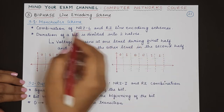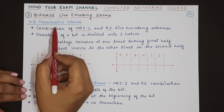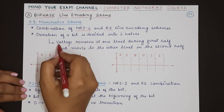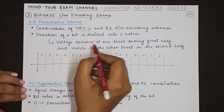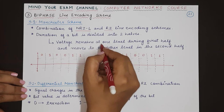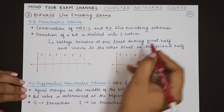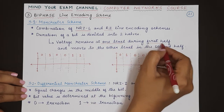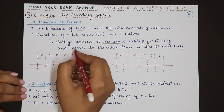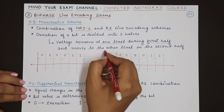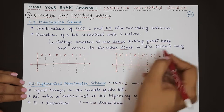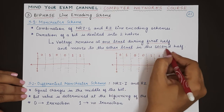During both these schemes, the voltage remains at one level during the first half of the bit duration and moves to the other level during the second half.